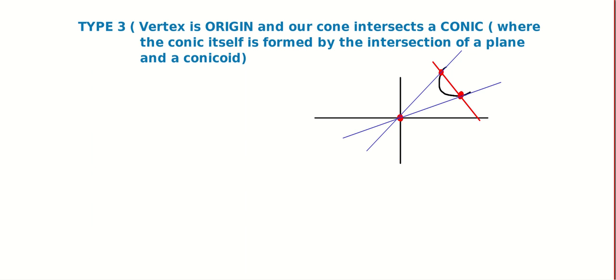The method you learned long back was very simple: you homogenize the conic using the line, meaning you make the equation of the conic into a homogeneous equation by borrowing a few factors from the line.